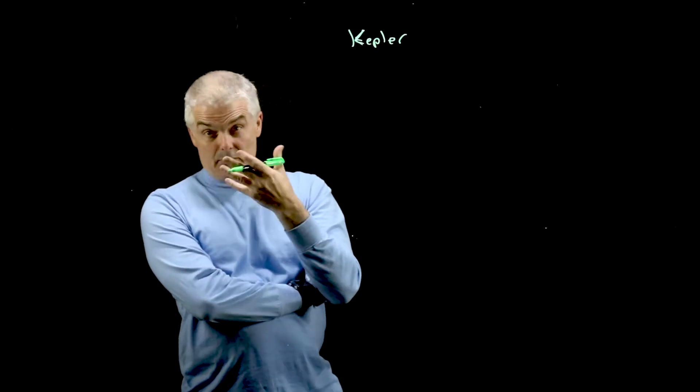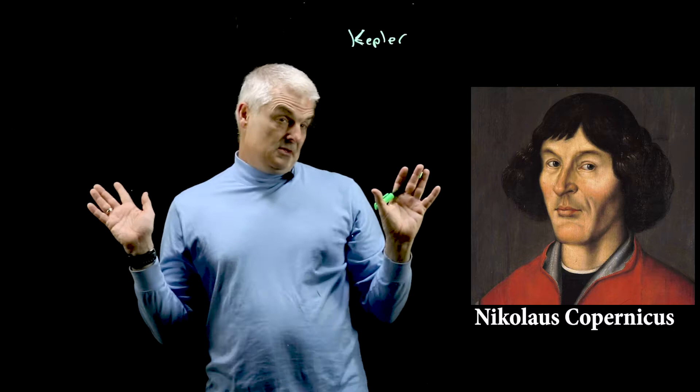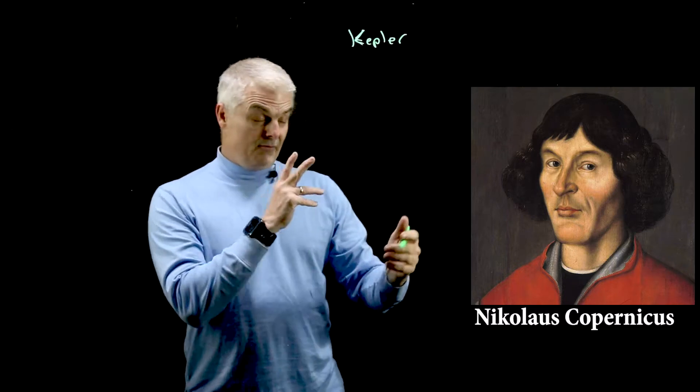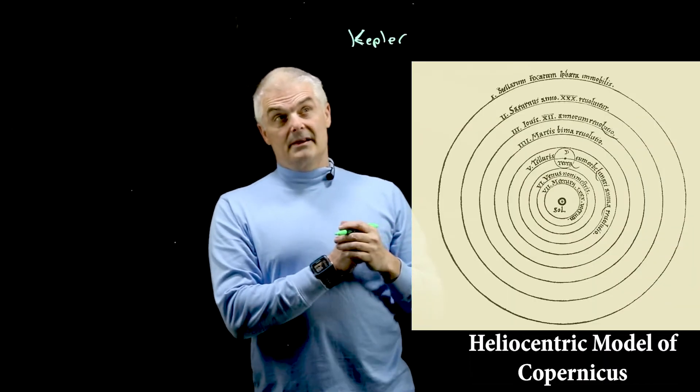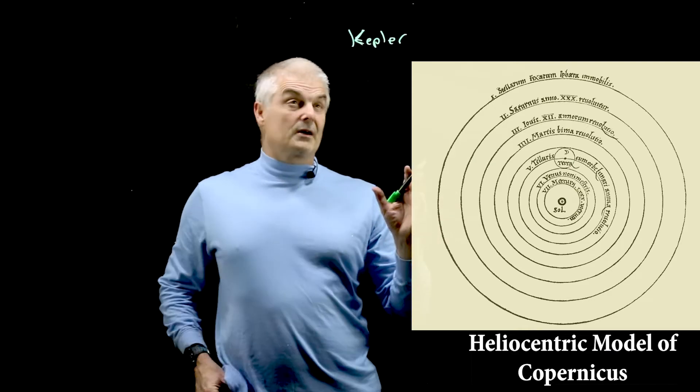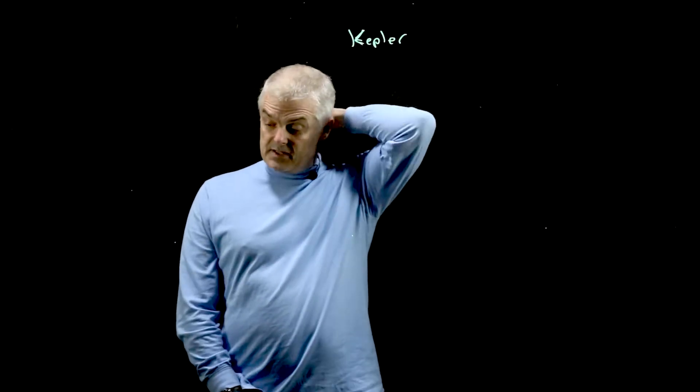And then this guy named Copernicus came along and he said, no, no, no, no, folks. The sun is the center of the solar system and everything revolves around it. And that just rocked the world. Totally rocked the world. And then once that happened, Kepler started figuring this out.